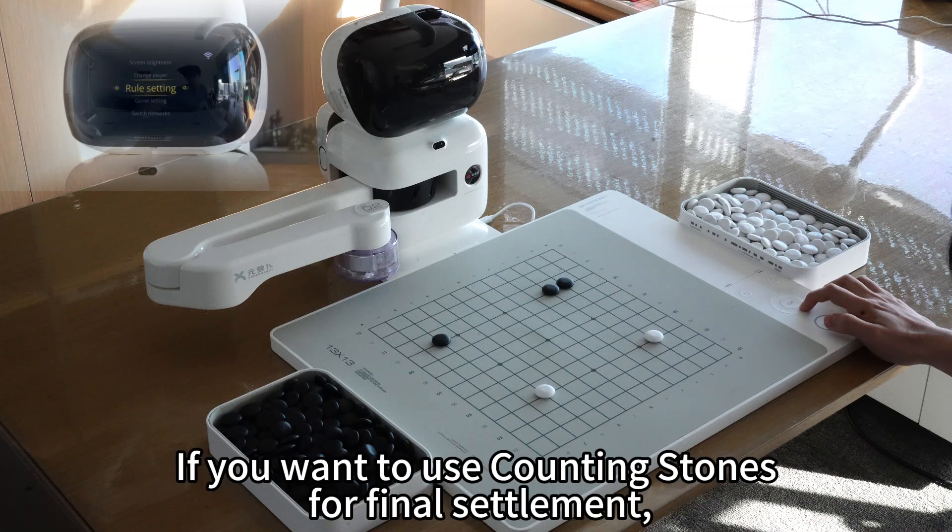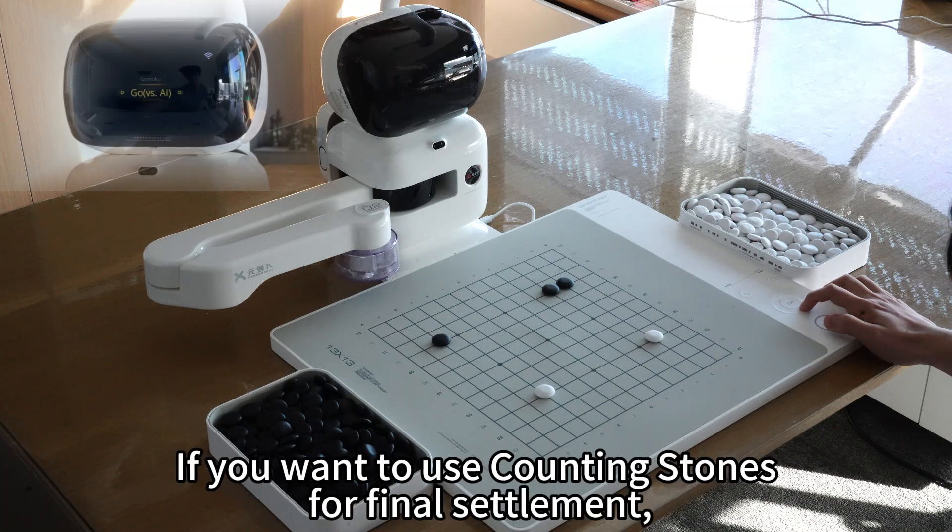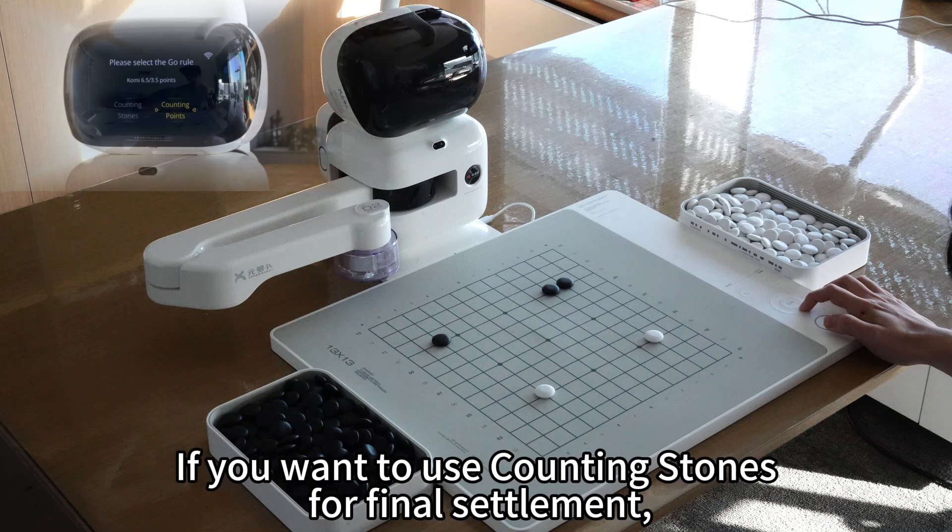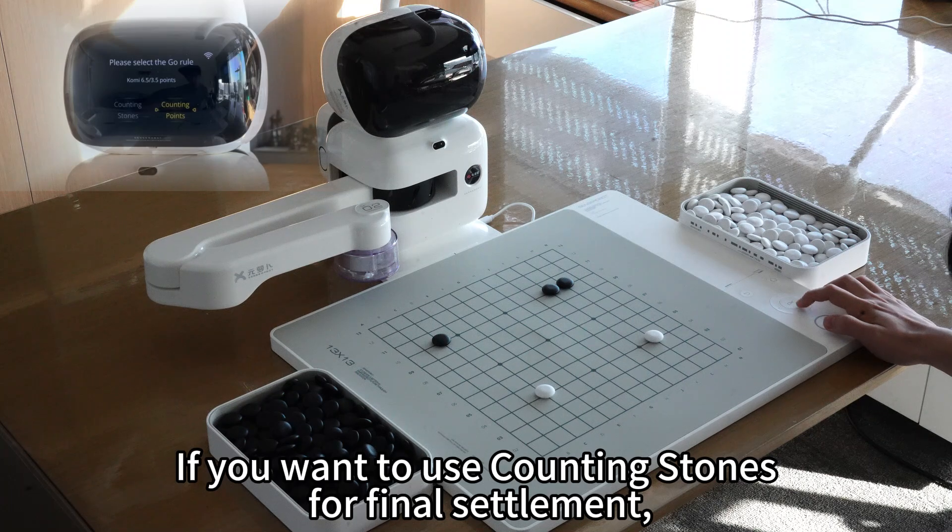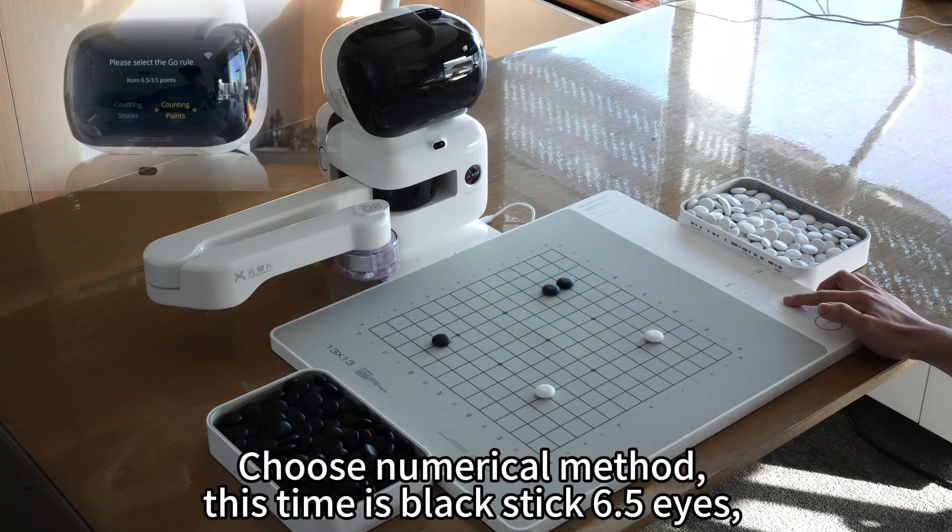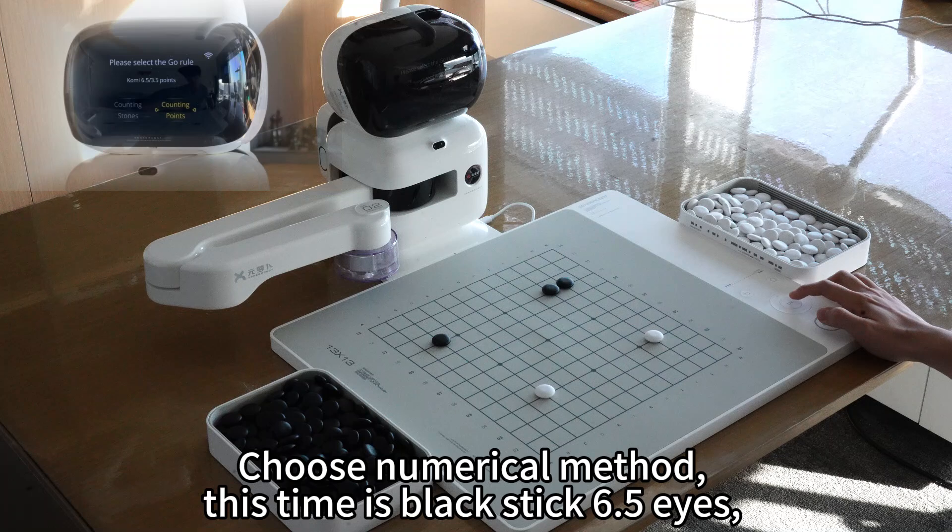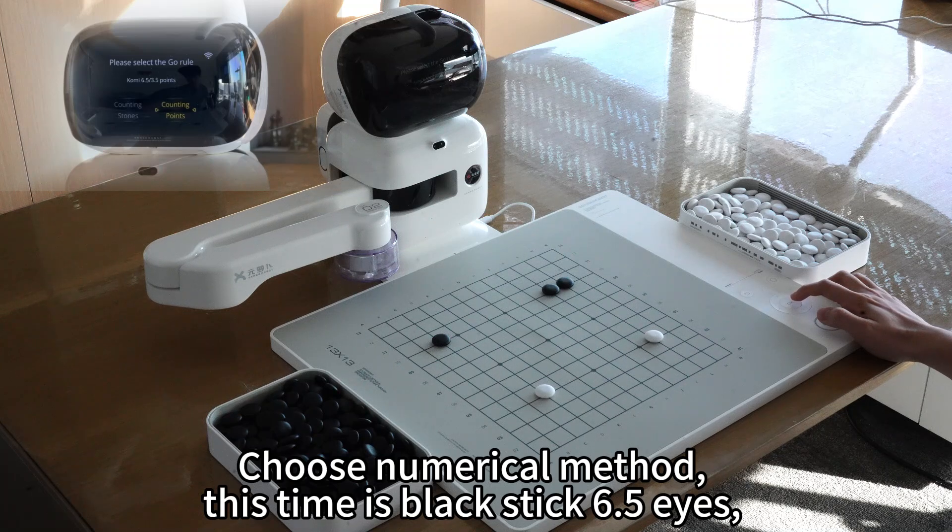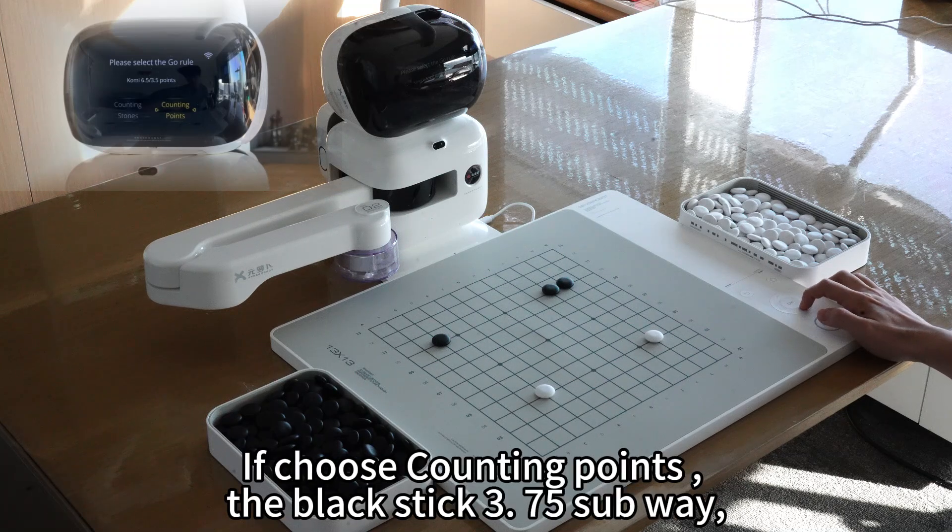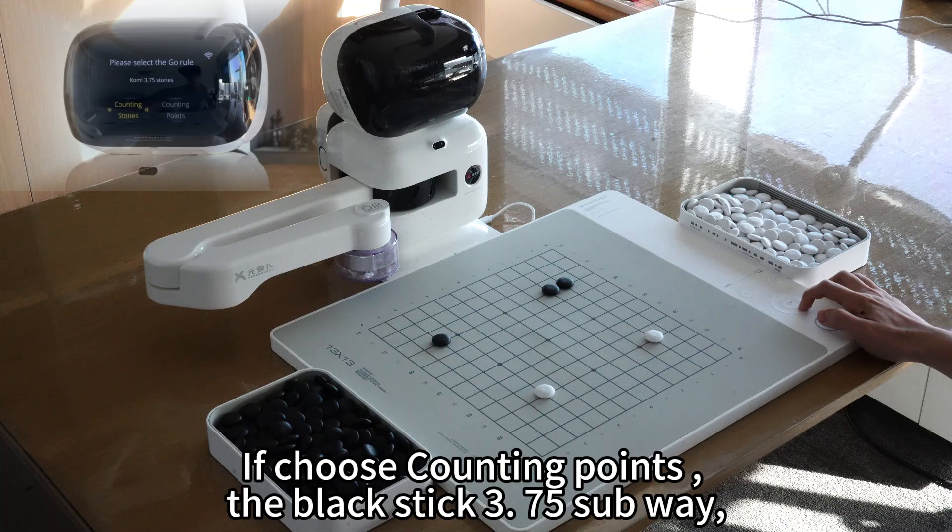If you want to use counting stones for final settlement, choose numerical method. This time black gets 6.5 eyes. If you choose counting points, black gets 3.75 sub.